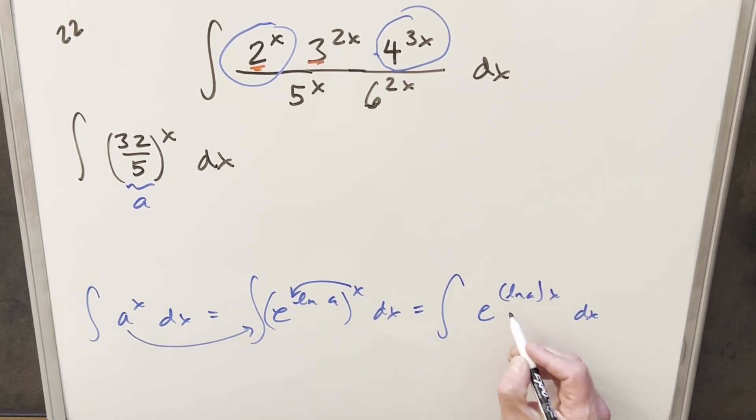But then we can just go ahead and integrate, treat this ln a like any other constant. And so when we do this, we're going to get just e ln a x over ln a plus c. But then for this here, what we do is we just do what we did here in reverse and write it back as a to the x. So what we get for our solution to this is just going to be a to the x over natural log a plus c.